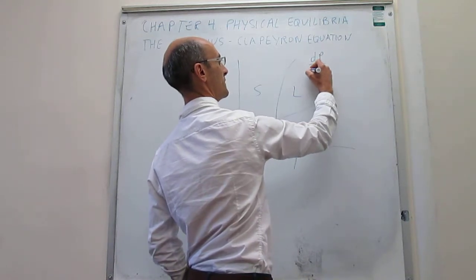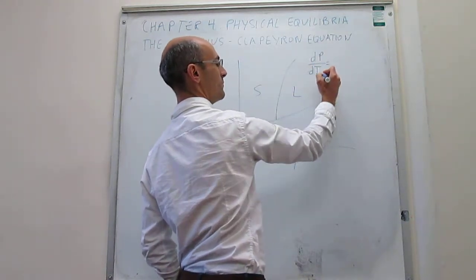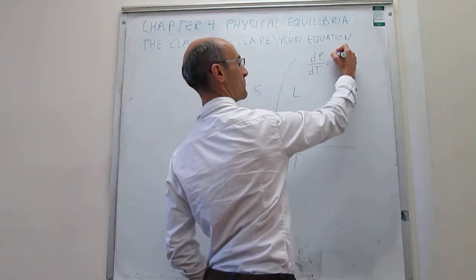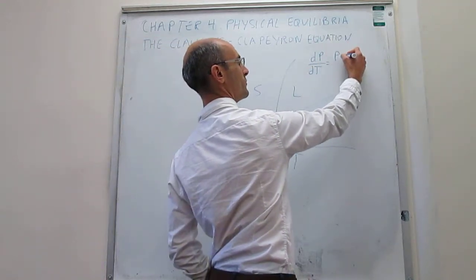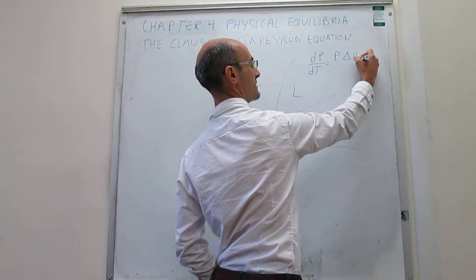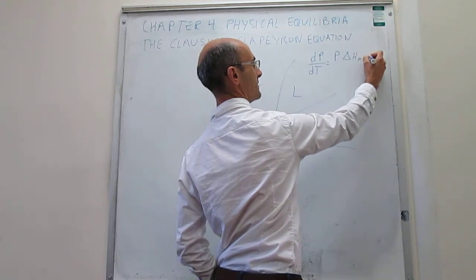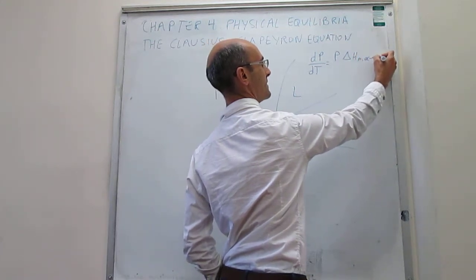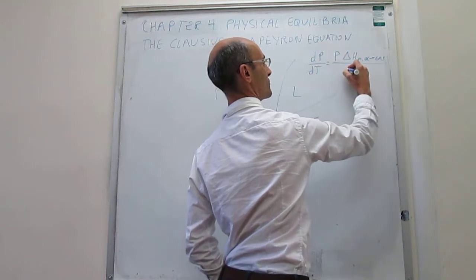The Clausius-Clapeyron equation is: dP/dT, the slope of these phase boundaries, equals the pressure at that point times the enthalpy of the phase transition (alpha to gas) over RT squared.